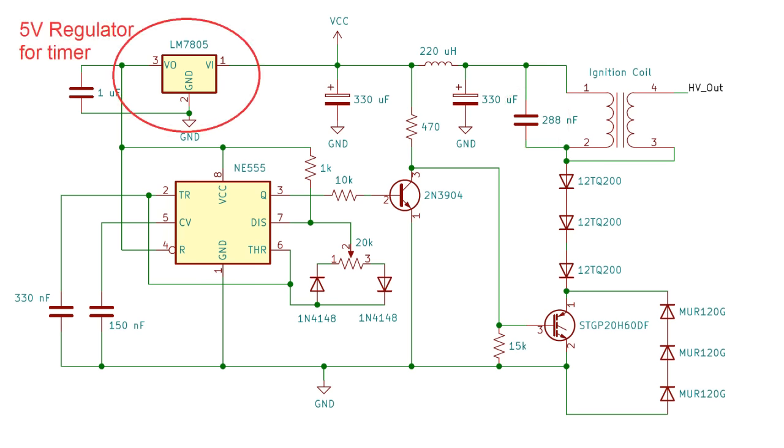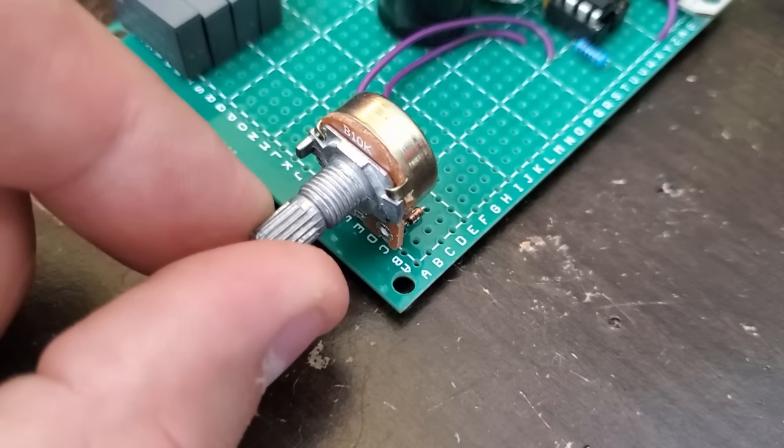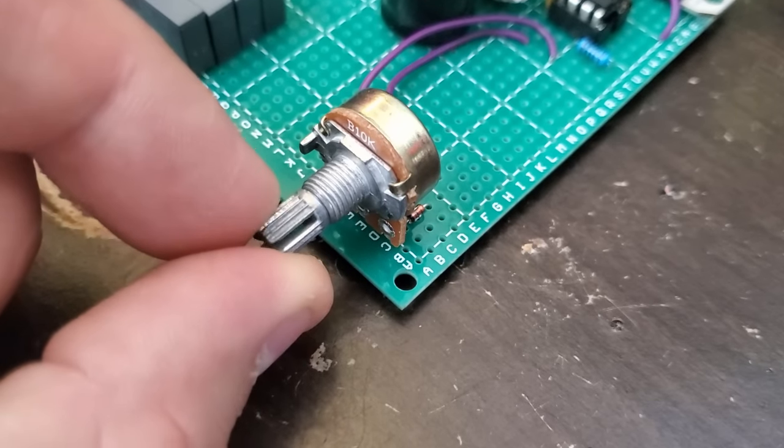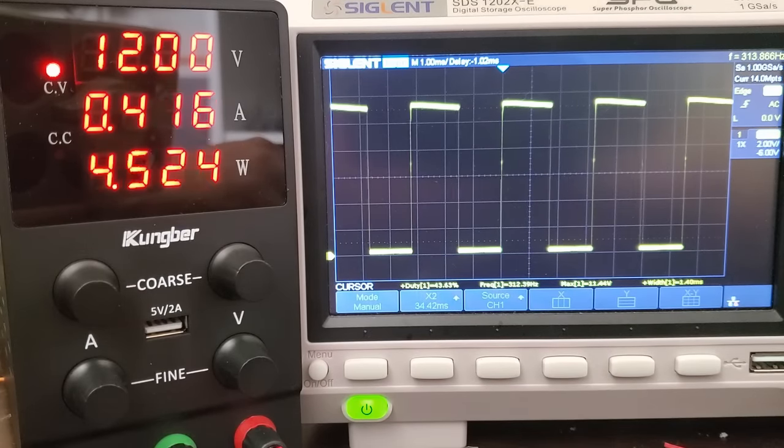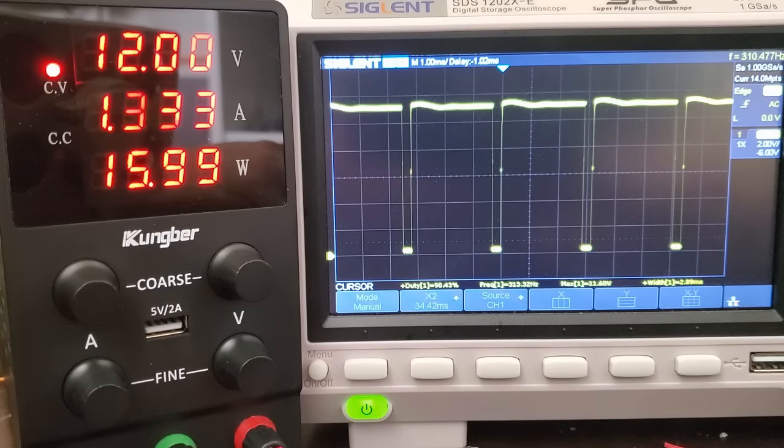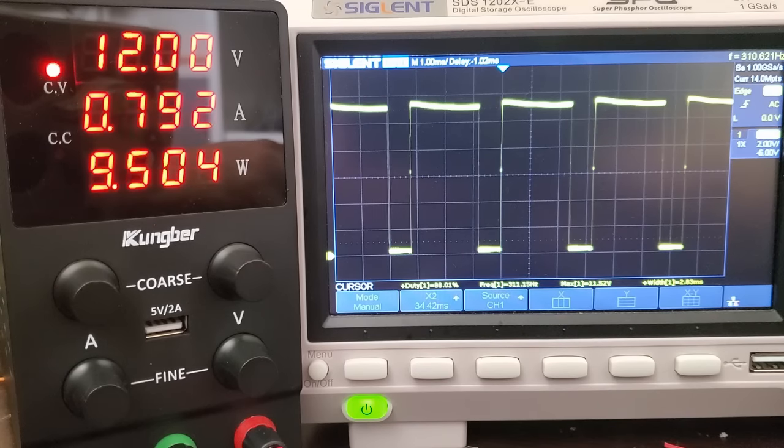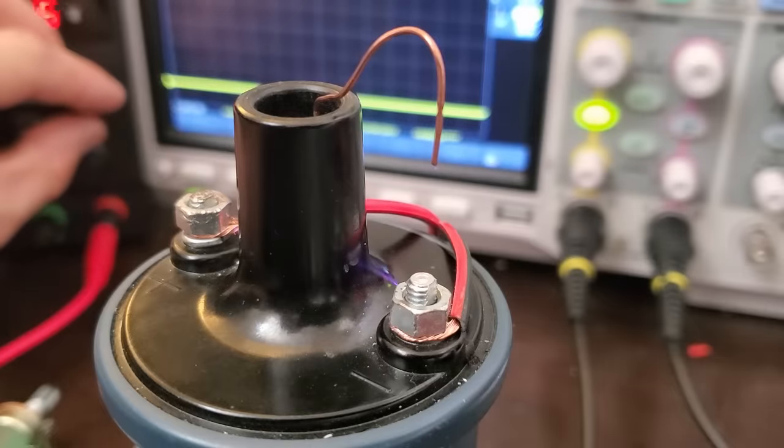I gave the timer a 5 volt regulator so that I could supply higher voltages to the circuit, and put a potentiometer in to adjust the duty cycle of the driver. The potentiometer allowed me to adjust the duty cycle from practically 0% to 90%, and the output frequency was about 300 Hz in the new circuit. The new circuit was dramatically more powerful.